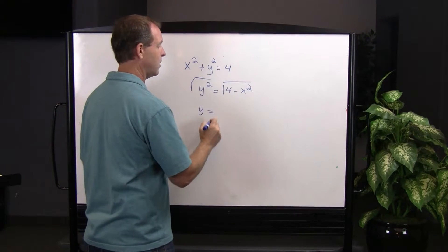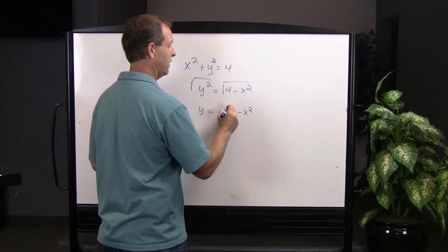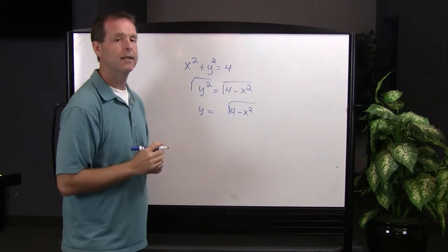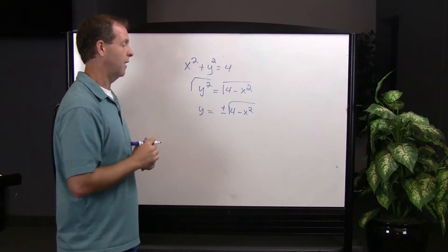I'm left with y equals the square root of 4 minus x squared, with a plus or minus out in front.